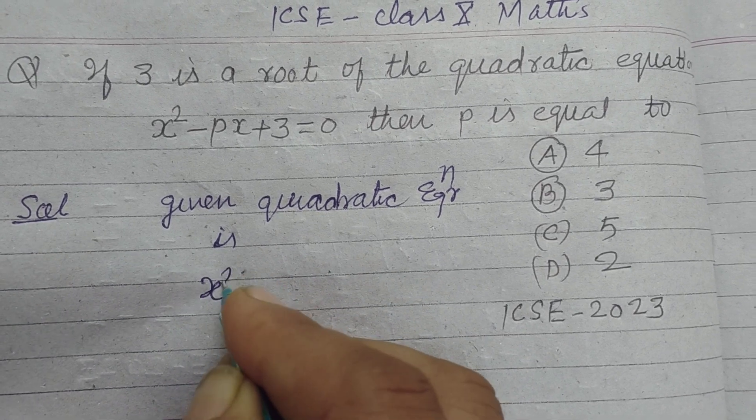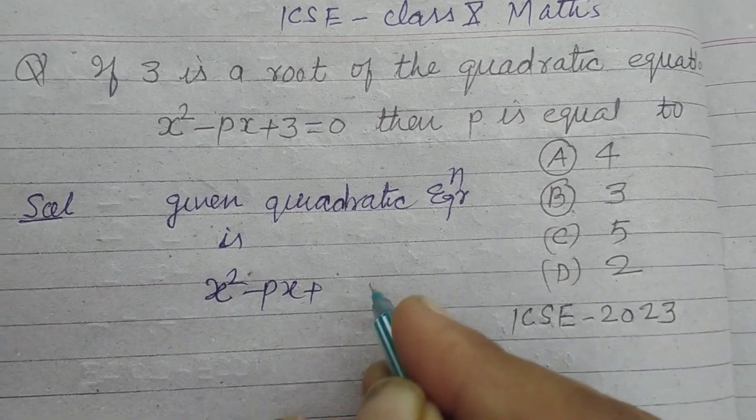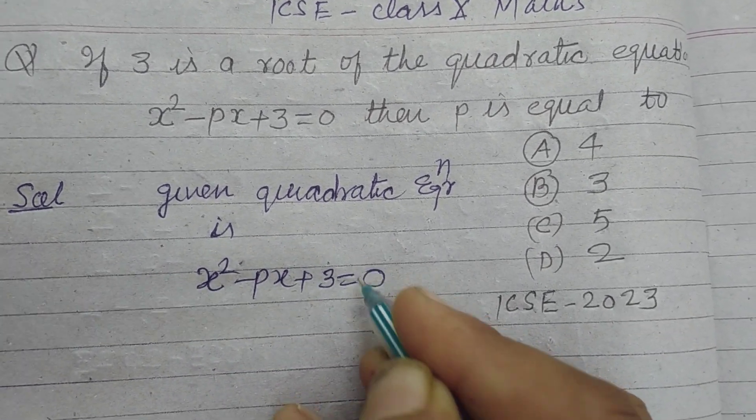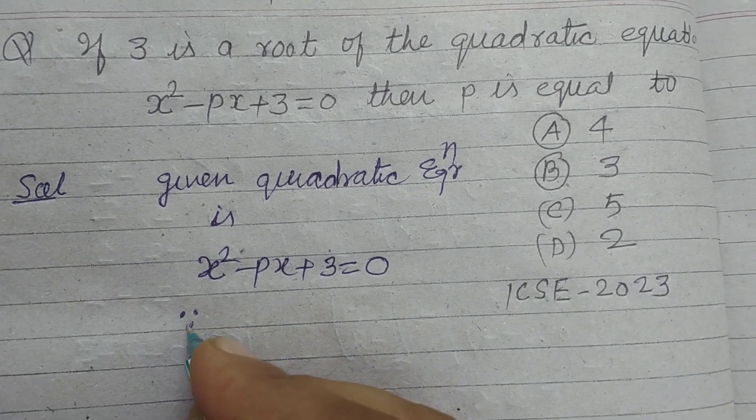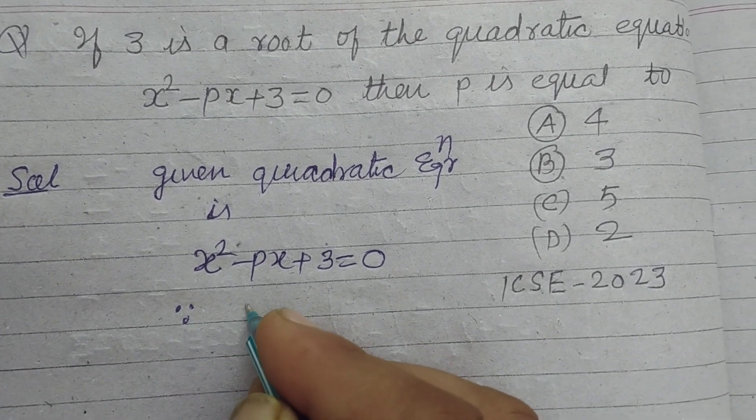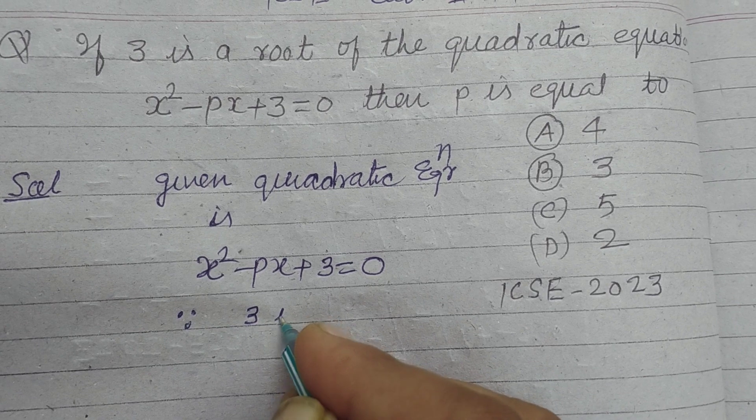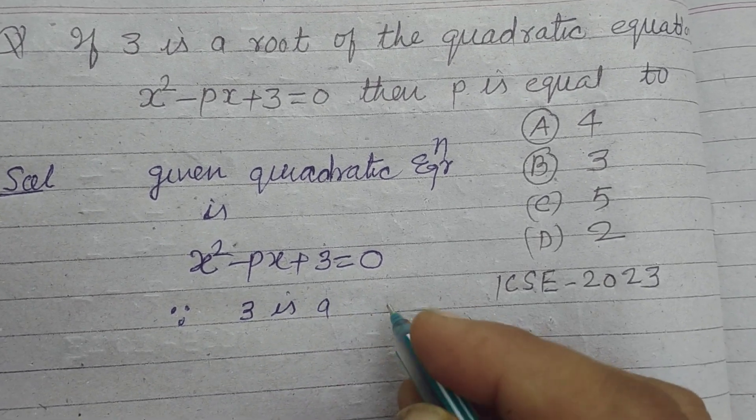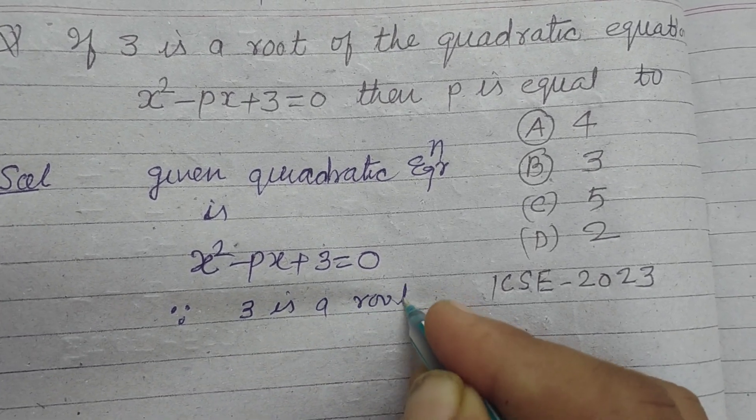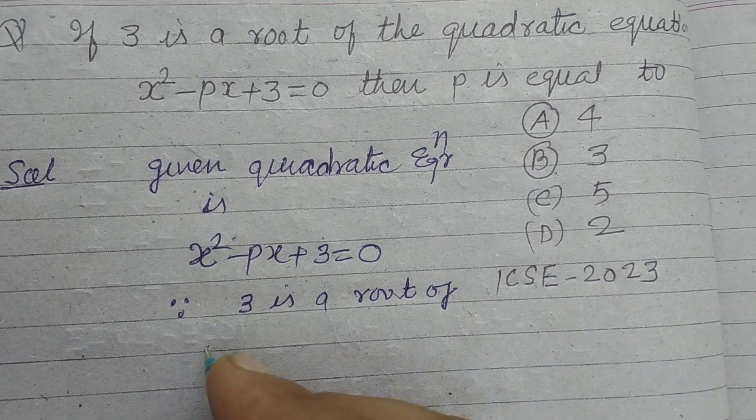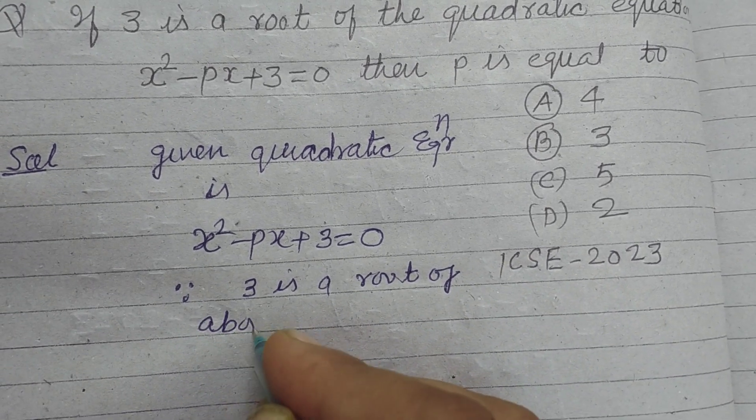x squared minus px plus 3 equal to 0. Since 3 is a root of the above quadratic equation,